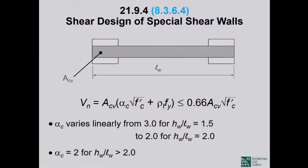V sub U comes directly from analysis. The nominal shear strength V sub N equals the shear-carrying area of the section — the total length of the shear wall multiplied by the web thickness; overhanging flanges do not count. V sub N equals A sub CV times the sum of two contributions: the concrete contribution, alpha sub C times the square root of F sub C prime, plus the steel contribution, rho sub T times F sub Y.